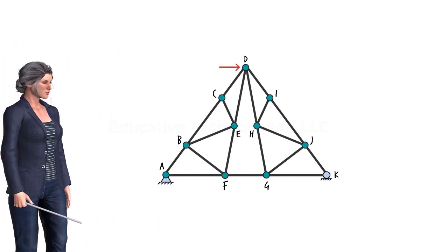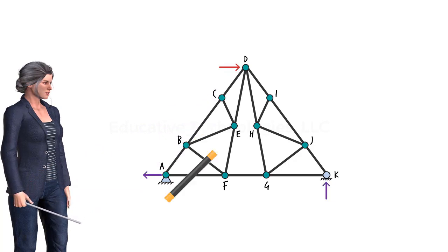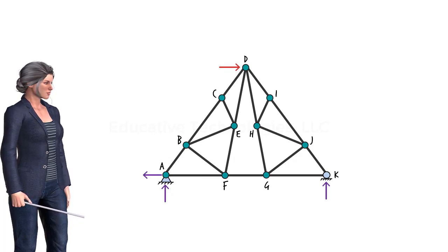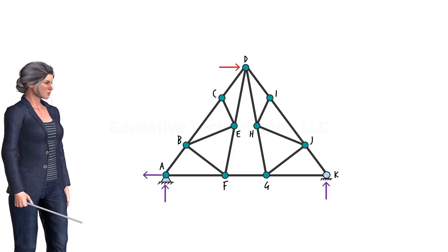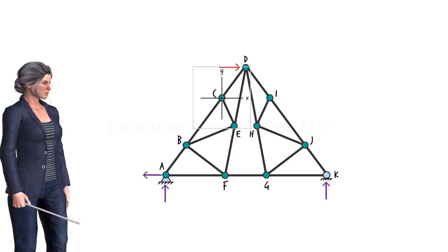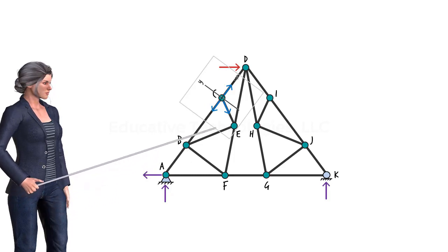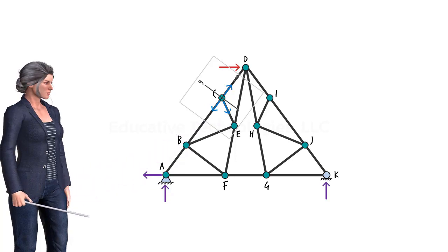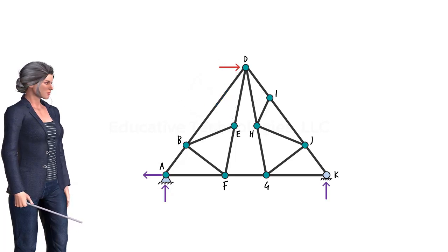Consider this statically determinate truss. Suppose we wish to identify the zero force members when the structure is subjected to a load at joint D. Keeping in mind that there is one reaction force at joint K and two reaction forces at joint A, we start by examining a truss joint subjected to no more than three forces. Joint C connects three members. Since there is no applied load or support reaction at the joint, it is subjected to three forces only. We place the coordinate system at the joint, show the member forces, then rotate the X-Y axes to align the X-axis with the two collinear forces. Now we can see that only the force in member CE has a component along the Y axis, so CE is a zero force member.